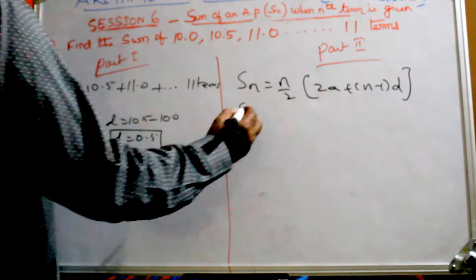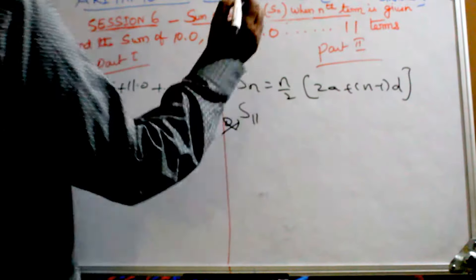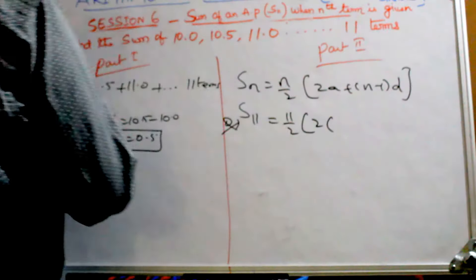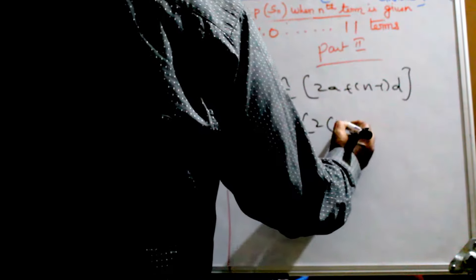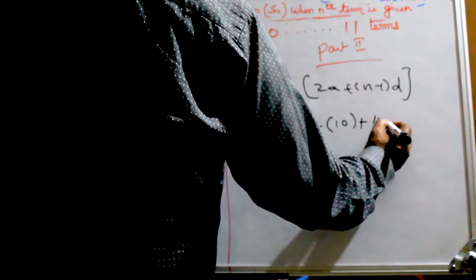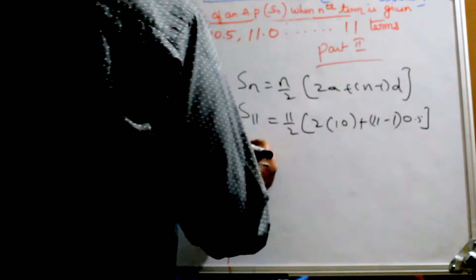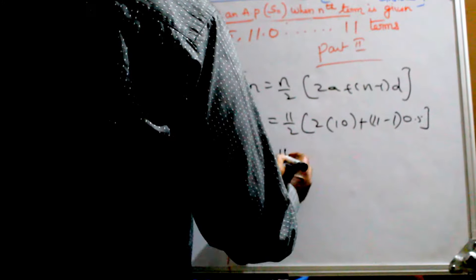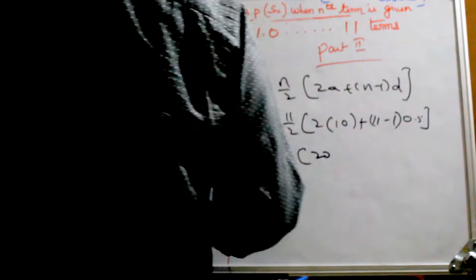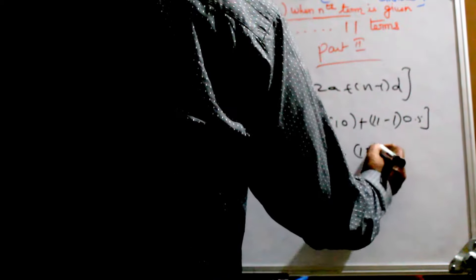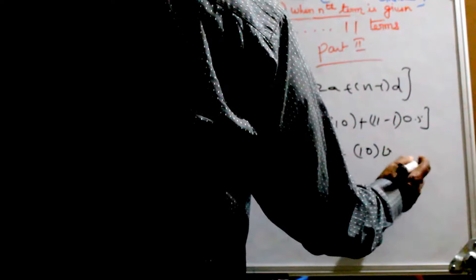S11 equals 11/2 times [2A + (n-1)D]. That's 11/2 times [2(10) + (11-1)(0.5)]. So S11 equals 11/2 times [20 + 10(0.5)].